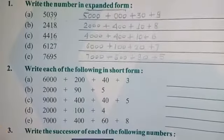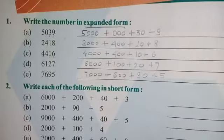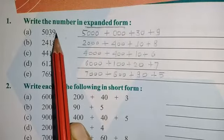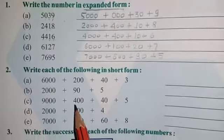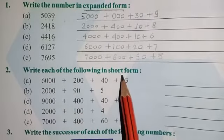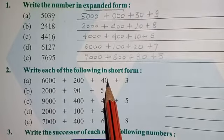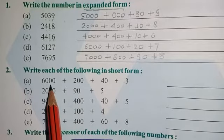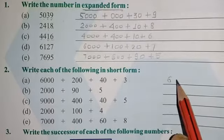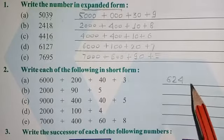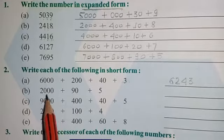The second question is: write each of the following in short form. So now just as we converted to expanded form, here the question gives expanded form and asks us to convert back to short form. To do this, first check how many place values are there — four, three, two, one. Four-digit place has 6, three-digit place has 2, two-digit place has 4, one-digit place has 3.